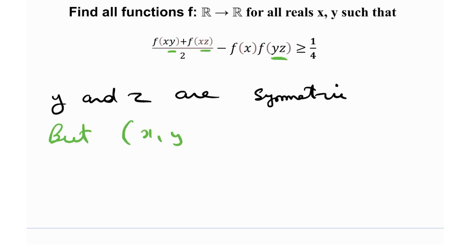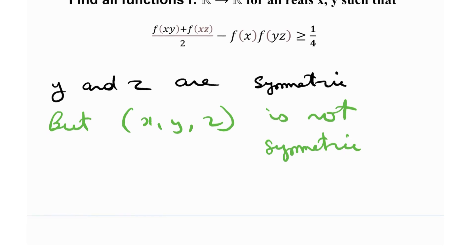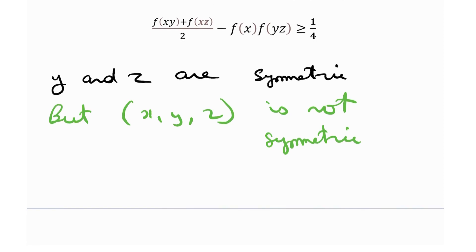However, x, y, z are not all symmetric — if I replace x with y, y with z, and z with x, I won't get the same thing. This is important because it motivates our substitution strategy. Because y and z are symmetric, I'll substitute them with the same number and x with a different number. Let's start with y = z = 1, which should lead to better simplifications than choosing separate values.